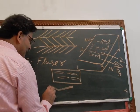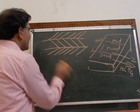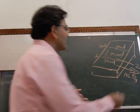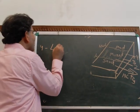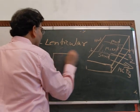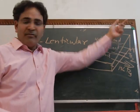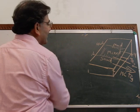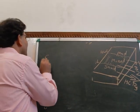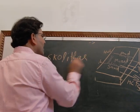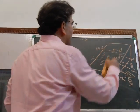Further towards land, wavy bedding is formed, characterized by alternating laminations of sand and mud. Further still towards land, lenticular bedding is found — where clay is dominant and lenses of sand occur within the clay. Even further towards land, we get bioturbation on the mud, and this region is characterized by the presence of skolithes, which are pipe-like organic bioturbation structures.